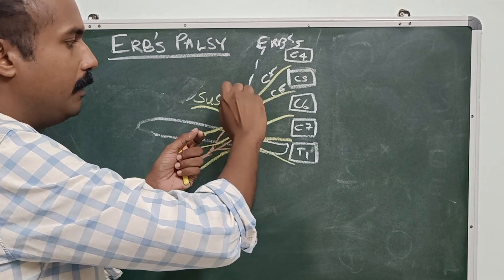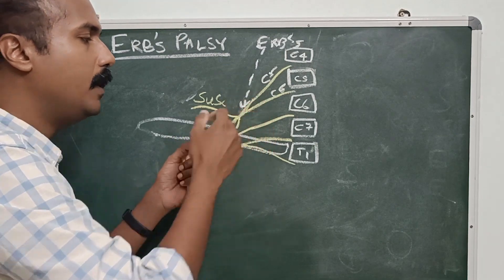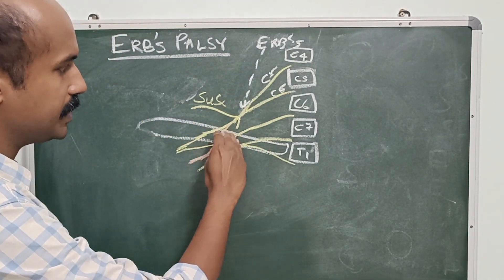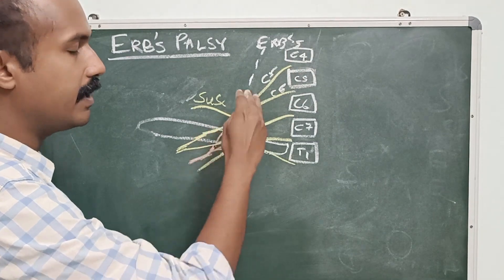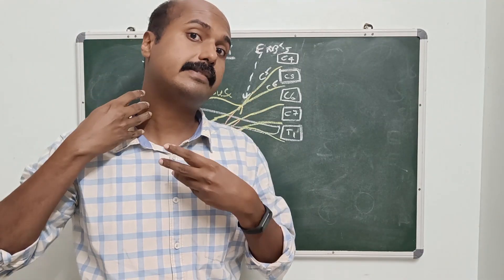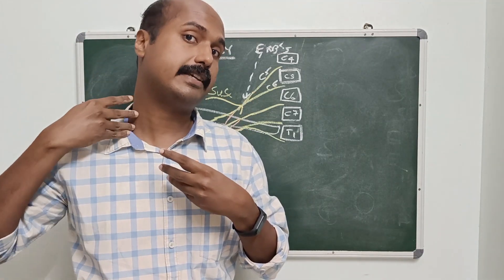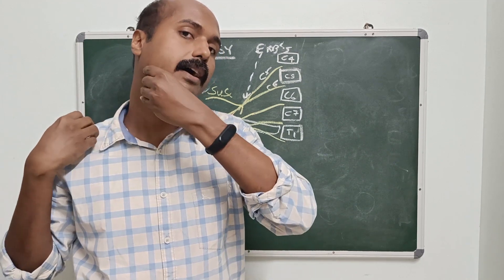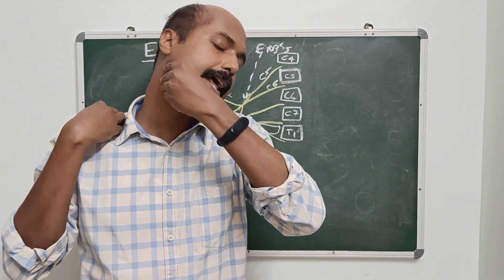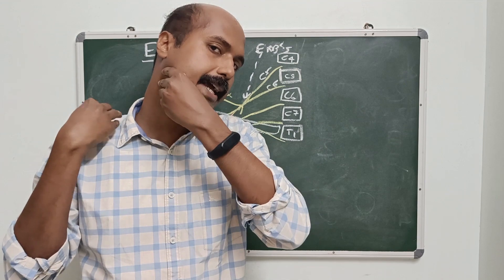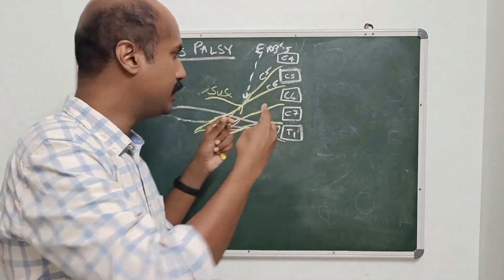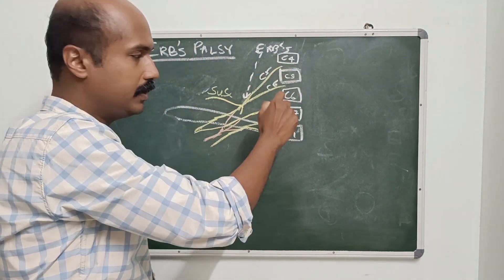So how can ERB's point be injured? The clavicle is at the level of the divisions, and the roots and trunks are above the clavicle, so they are on the neck — the nerves are arising from the neck. An injury that causes an increase in the angle between the neck and the shoulder is the mechanism by which the upper brachial plexus can be injured.